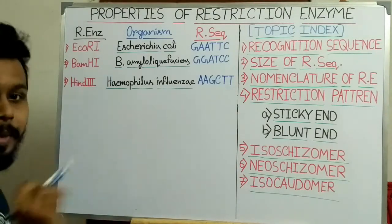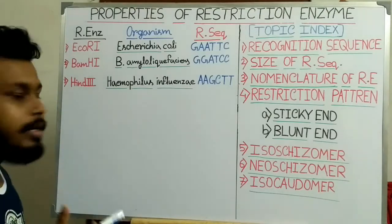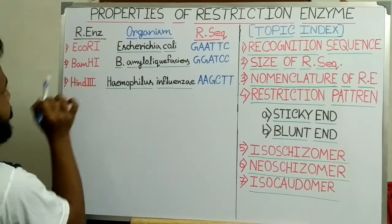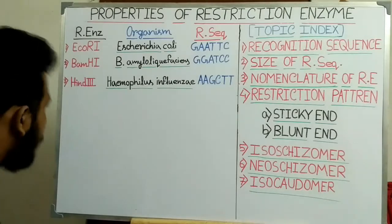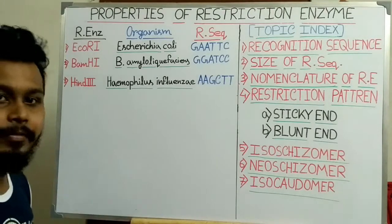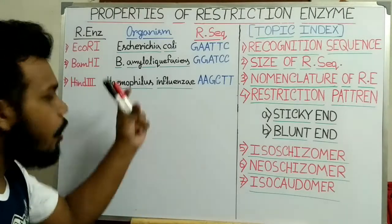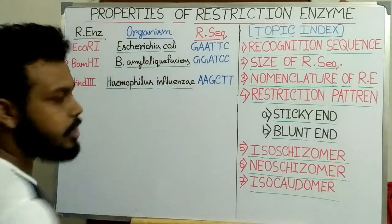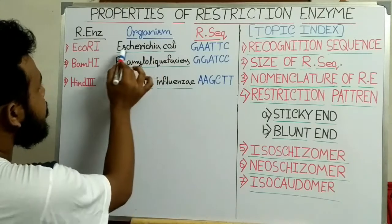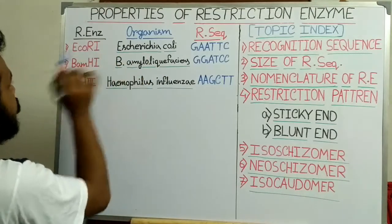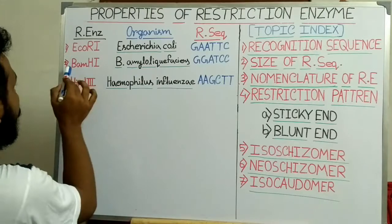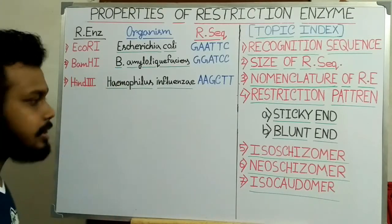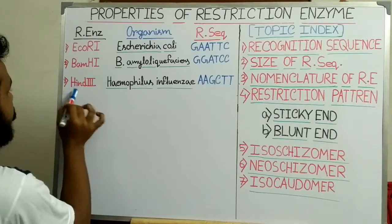So the nomenclature: at first, what does the first capital letter signify? For EcoR1 that is E, for BamH1 that is B, and for HindD3 that is H. This capital letter signifies the genus name of the organism from which these restriction enzymes are isolated. For EcoR1 the organism is Escherichia coli and the genus name is Escherichia, so E signifies Escherichia. For BamH1 the B stands for Bacillus, which is the genus name. And H is for Haemophilus.